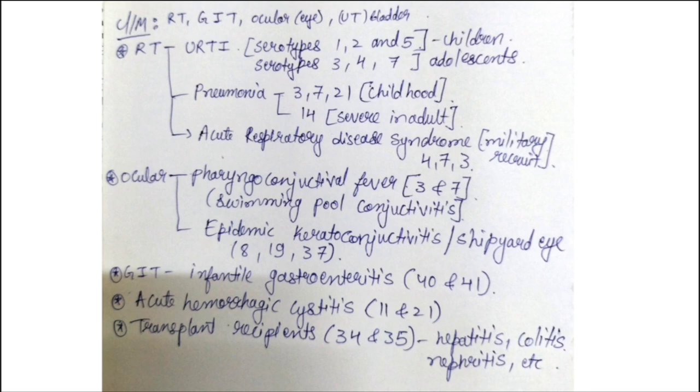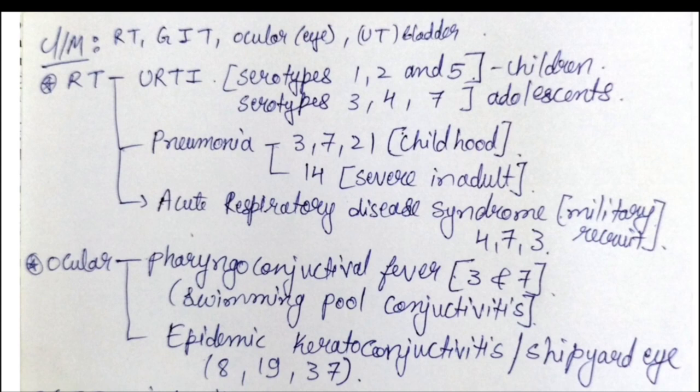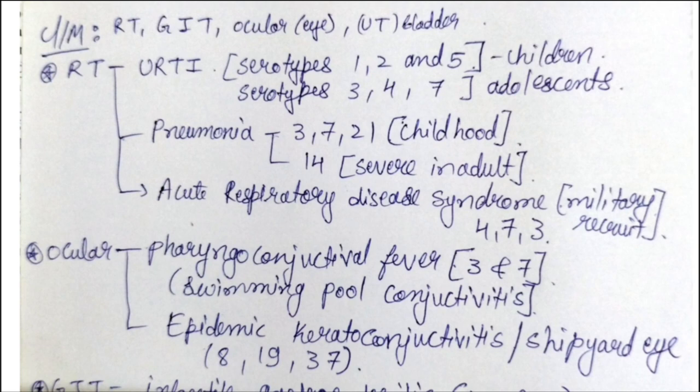Clinical manifestations: adenovirus infects the respiratory tract, GIT, ocular system, and urinary bladder — remember these four sites. In the respiratory tract, it causes upper respiratory tract infection (URTI). Serotypes 1, 2, and 5 infect children, while serotypes 3, 4, and 7 infect adolescents.